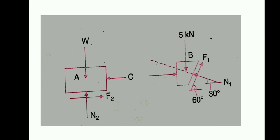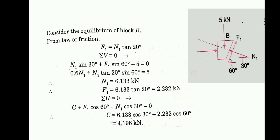The main equations applied in this type of problem are the equilibrium equations and the law of friction. Applying these to Block B: since the limiting angle of friction between block B and the inclined plane is 20 degrees, by the law of friction F1 divided by N1 equals tan alpha, that means F1 by N1 equals tan 20 degrees, so F1 equals N1 tan 20 degrees.